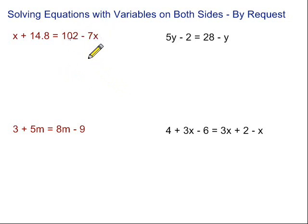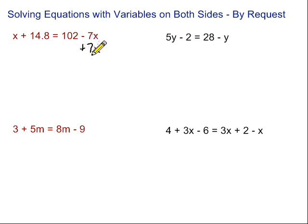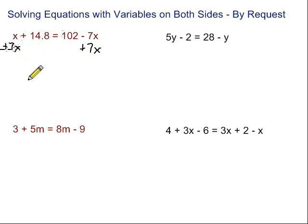I like to get rid of the negatives if possible, so I'm going to get rid of this minus 7x. To do that, I'm going to do the opposite — if I have minus 7x, I can add 7x. Remember, if we're working with equations and we do something on one side, in order to maintain the equality, we need to do it on the other side as well. So add 7x over here.